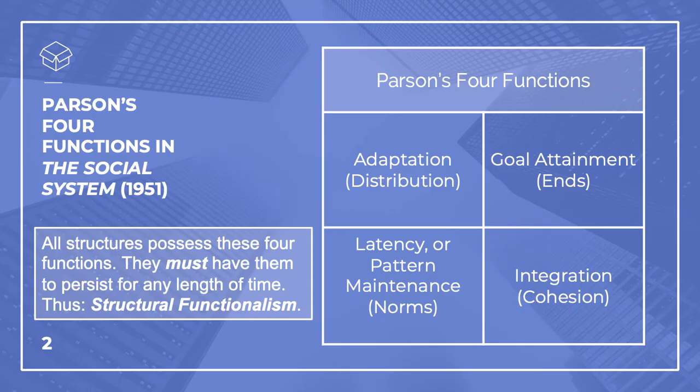While before, in The Structure of Social Action, Parsons was trying to distill a theory of action from existing sociology, now he's trying to build a theory of action from the ground up. This applies to any organism that acts. Let's go through the four structural functions in detail. 1. Adaptation. Individuals must adapt themselves to their surroundings — at the cellular level, to that of an individual human, to a society. To persist, the system of action must relate and adapt to its environment. A is for adaptation.